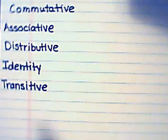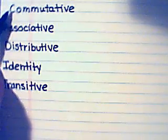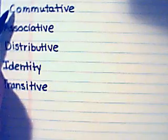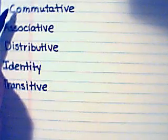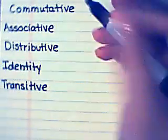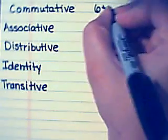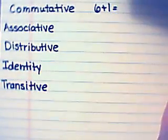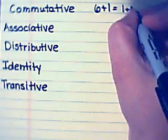The first property that I'm going to talk to you about is the commutative property. The commutative property works for both addition and multiplication, and basically what it says is 6 plus 1 equals the same thing as 1 plus 6.